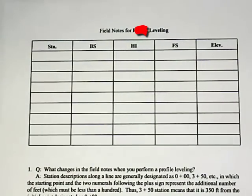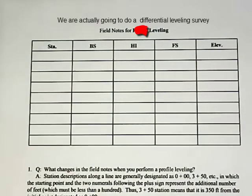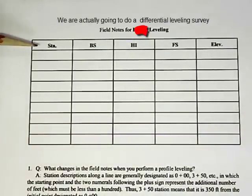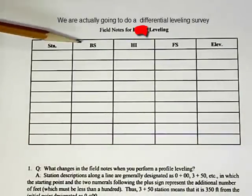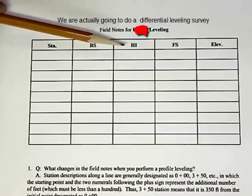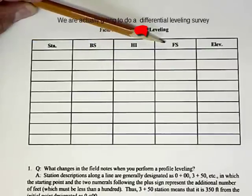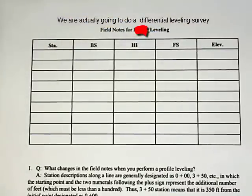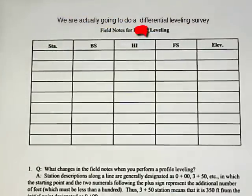We're going to start by describing the field notes and what they look like. We always want to start by having our squares drawn up there. We're going to start with columns for station, back sight, HI, foresight, and elevation. This is the way we set up our field notes.